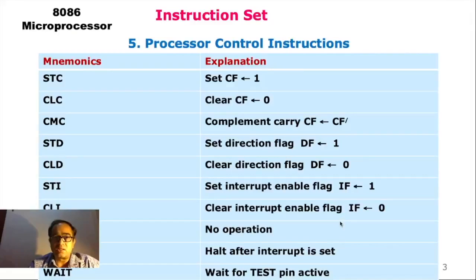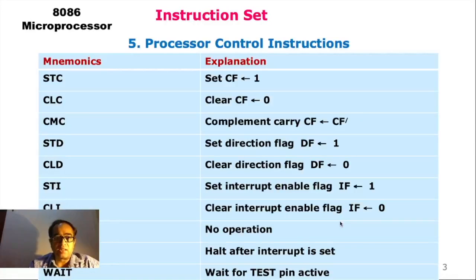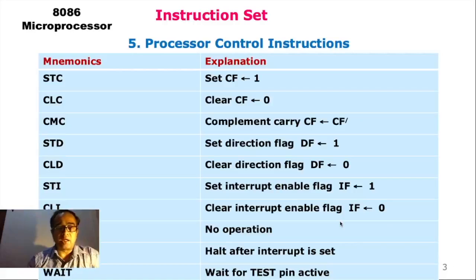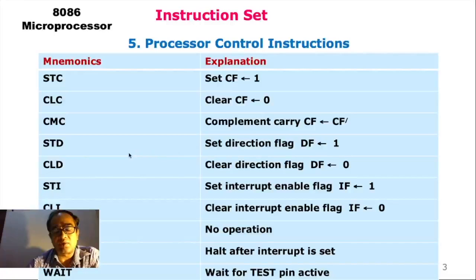Let us try to understand the process control instructions. All these particular instructions actually control the working of a CPU. STC is set the carry flag, CLC clears the carry flag, CMC is complement carry flag, and STD is set the direction flag. As we have seen in the earlier presentation, these direction flags are basically used to tell from where to where the data is being transferred.